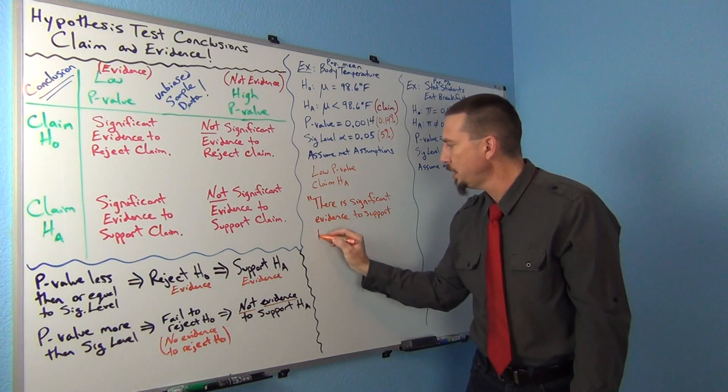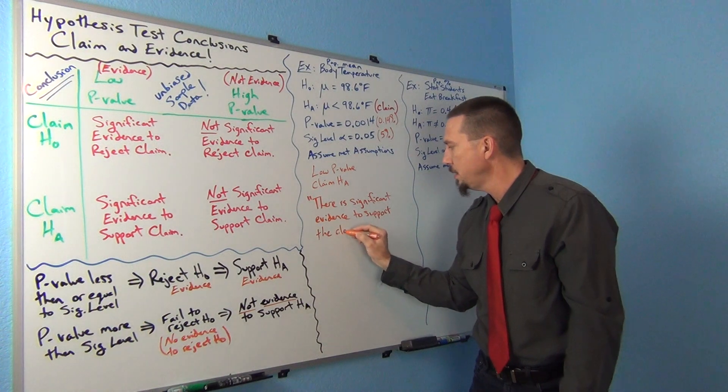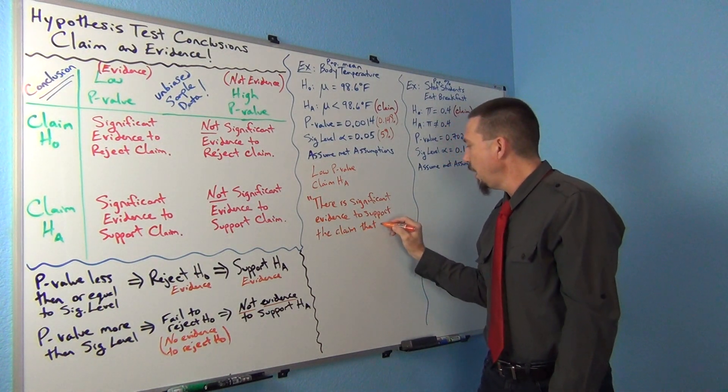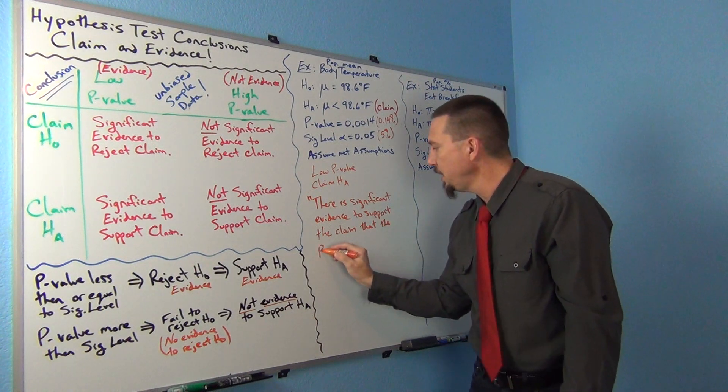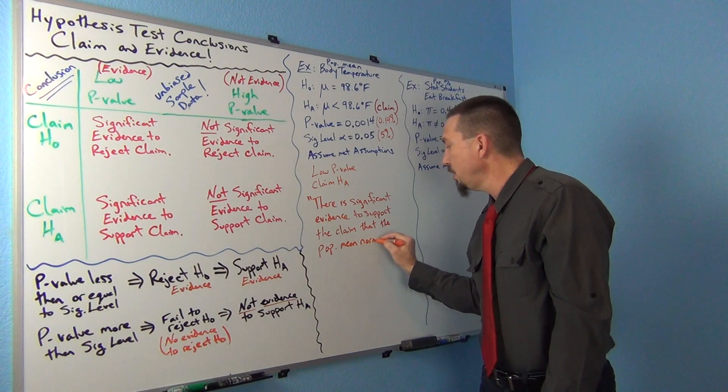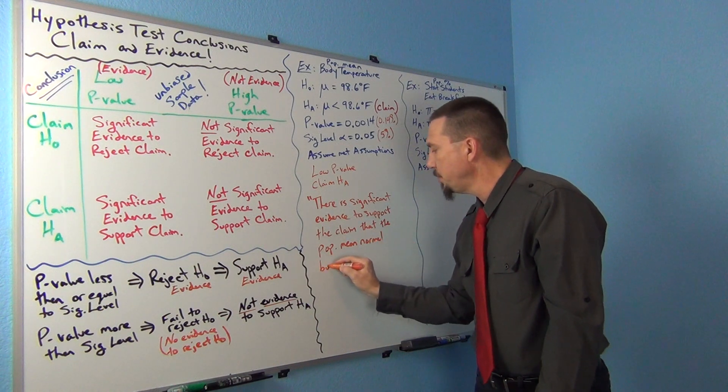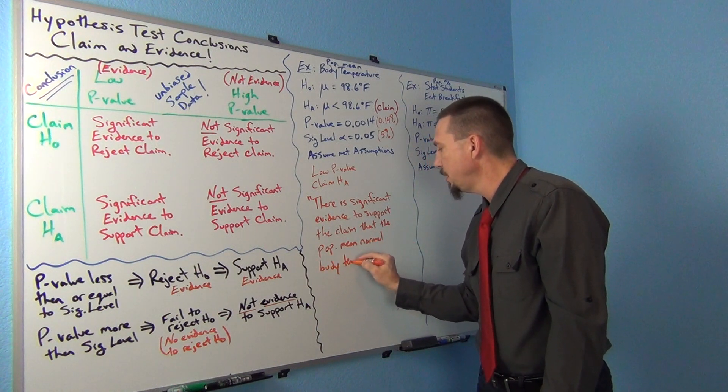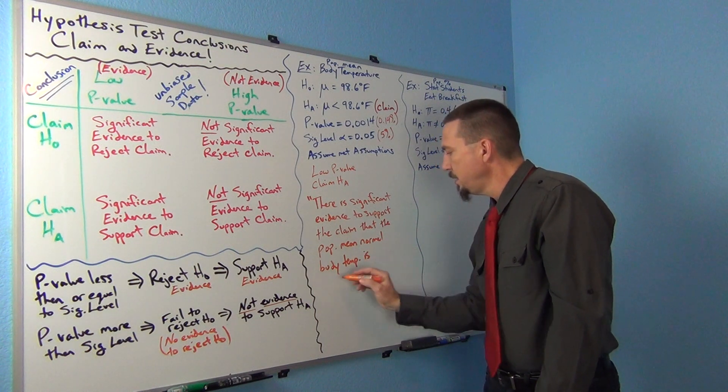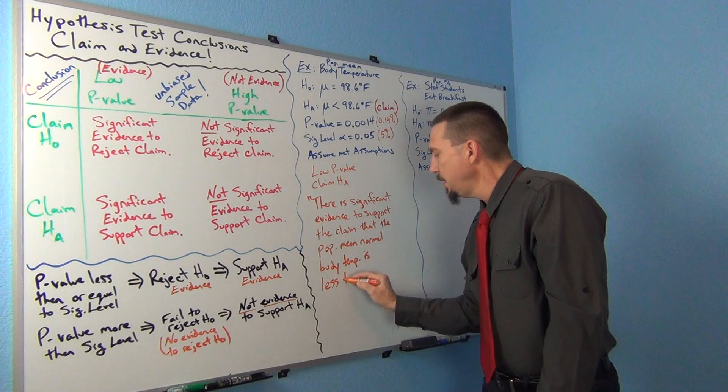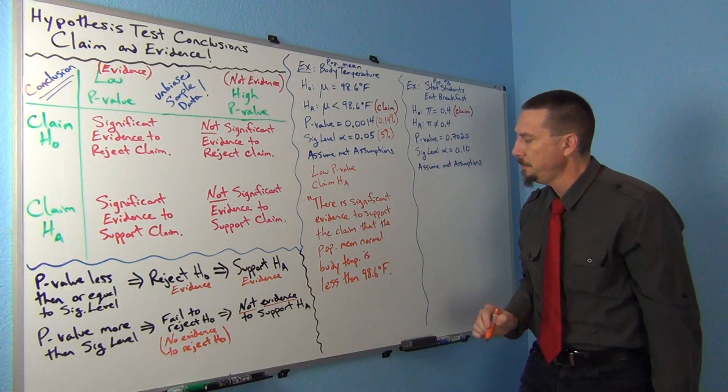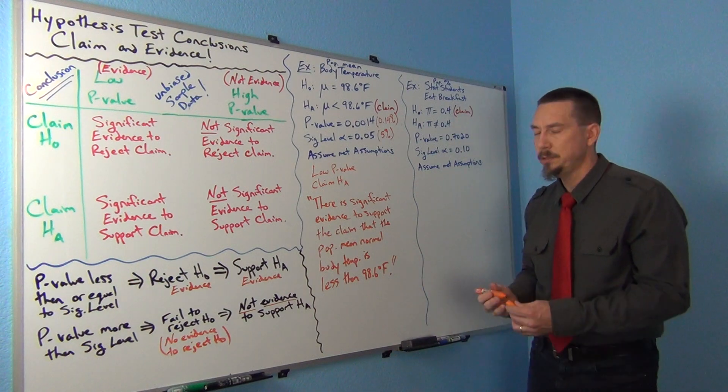To support the claim that the population mean normal body temperature is less than 98.6 degrees Fahrenheit.